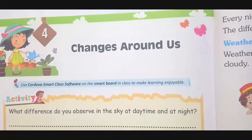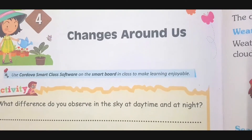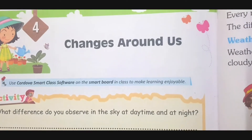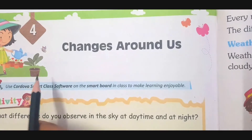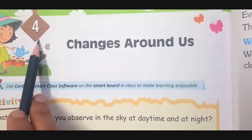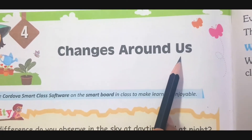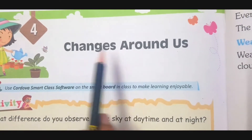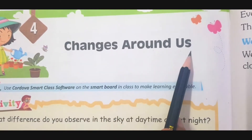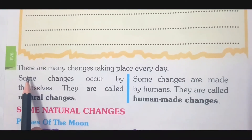Children, last lesson we learned about natural-made things and human-made things. Today we are going to start lesson 4, Changes Around Us. Now we will start the reading of the lesson.